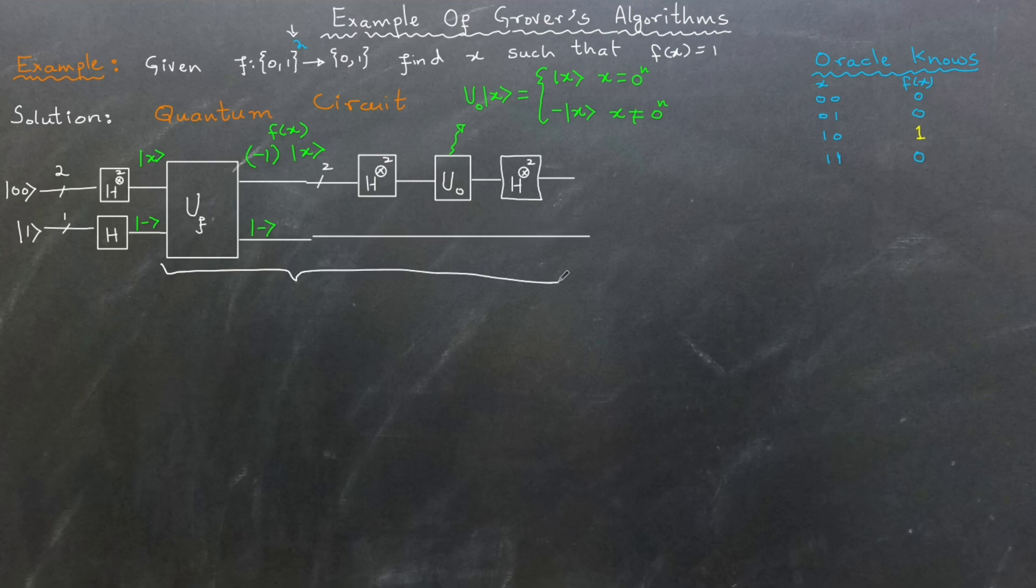These steps together form what is known as one Grover rotation. Now let's calculate how many Grover rotations are needed as we might have to extend our circuit based upon the number of Grover rotations.